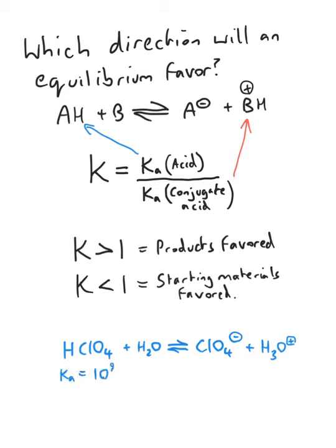The Ka, or the acidity constant of perchloric acid, is 10 to the 9, and the Ka of the hydronium ion is 55. Which side of the equilibrium is favored? You may pause now.